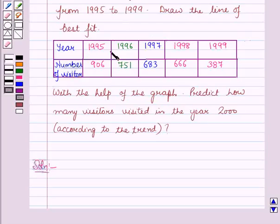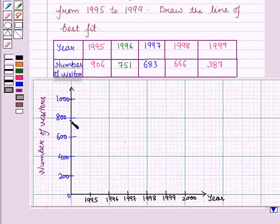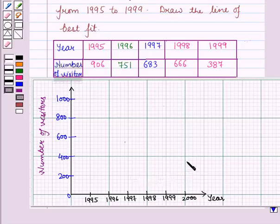Let us draw a scatter plot for the given data. Here we will take number of visitors on the vertical axis and on the horizontal axis we will take the years. On the vertical axis, that is the y-axis, we have taken a scale of 200, and on the horizontal axis we take the years as 1995, 1996, and so on up to 2000.